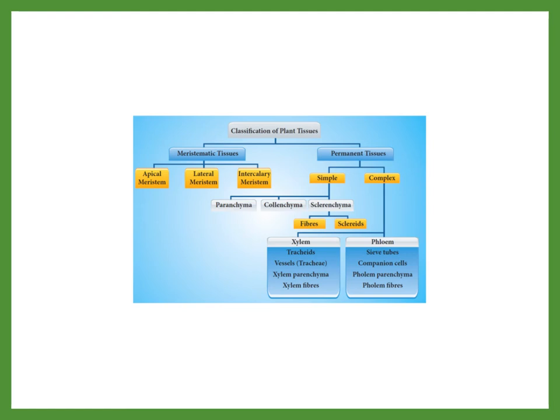Meristematic tissue, as we know, are of three types: apical meristem, lateral meristem and intercalary meristem. Permanent tissues are as simple permanent and complex permanent. Simple permanent tissues are further classified into parenchyma, collenchyma, sclerenchyma. And this parenchyma, based on their location as chlorenchyma, chloroplast filled cells, parenchyma cells with air spaces are aerenchyma, and parenchyma cells with storage material are called storage parenchyma.